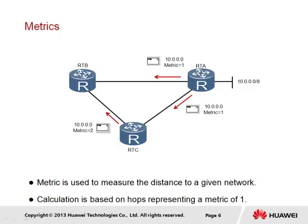The metric is what is used to determine which route constitutes a better route. In RIP, the metric is determined based on hops, and represents the distance to a given network. A lower hop metric is considered a better route. In the case of RTB, it learns the best route from RTA and RTC, and is able to determine based on the lower metric that the route via RTA represents the better route to reach network 10.0.0.0. The hop metric is incremented by 1 each time a packet is to be forwarded by a router.